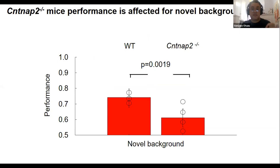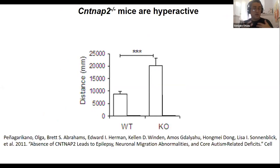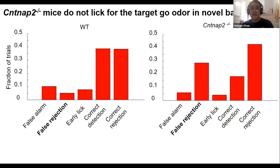We considered possible confounders unrelated to olfactory processing. One is hyperactivity — CNTNAP2 mice cover twice the distance of wild-type mice, so maybe they have trouble withholding licking for novel backgrounds. But the opposite occurred: the type of mistake CNTNAP2 mice make is failing to lick when a go odor is present in a novel background — false negatives, not false positives.